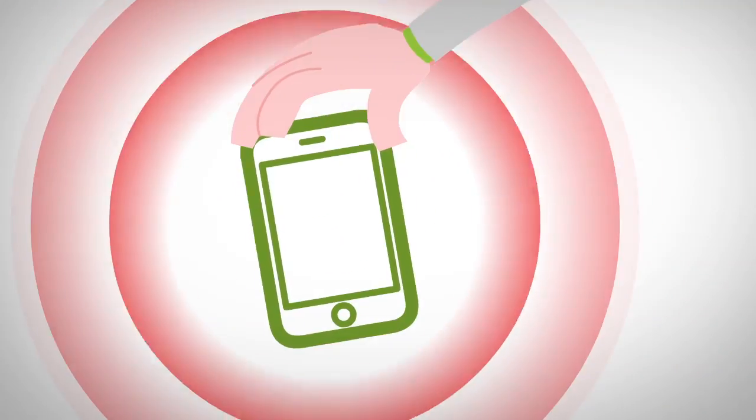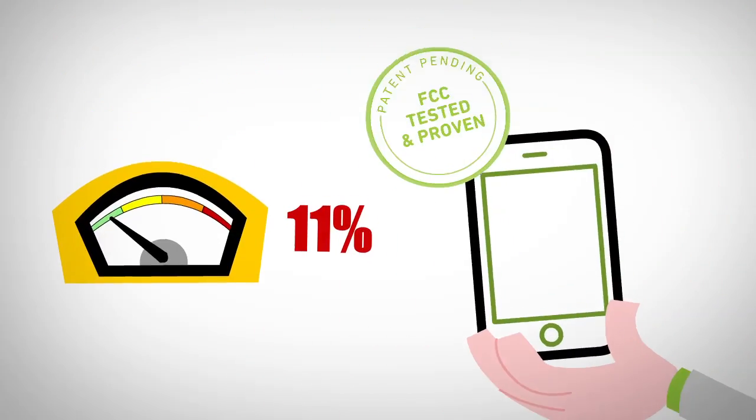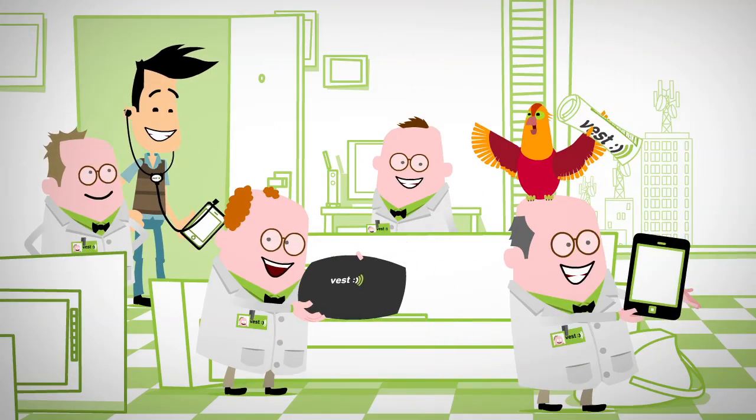There's also Vest Case, a groundbreaking shell that reduces radiation released by your cell phone by 89%. Beautifully designed, wonderfully effective.